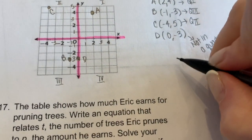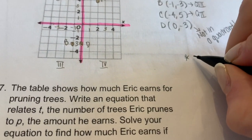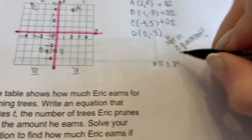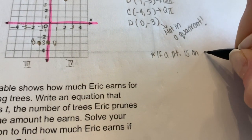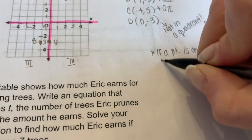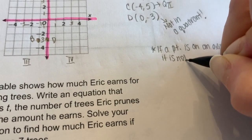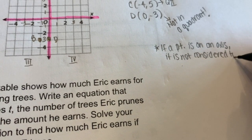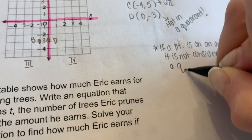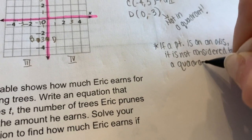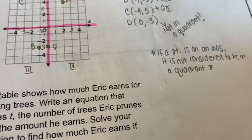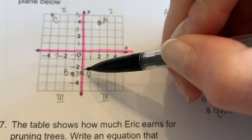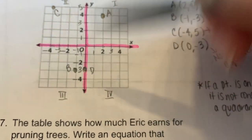If a point is on an axis, it is not considered to be in a quadrant. Point D is on the y-axis, so it's not in any quadrant — it's on the borderline of where two quadrants meet, so you can't assign it to either one.